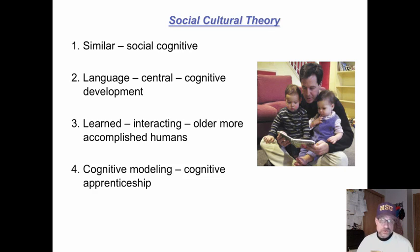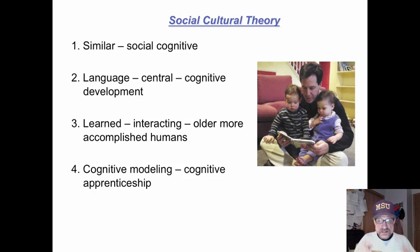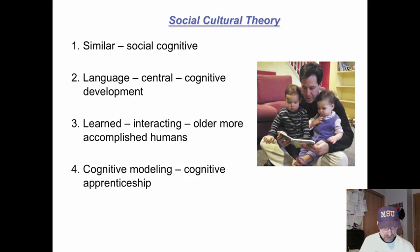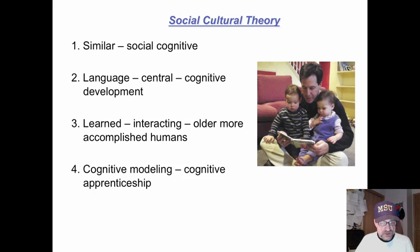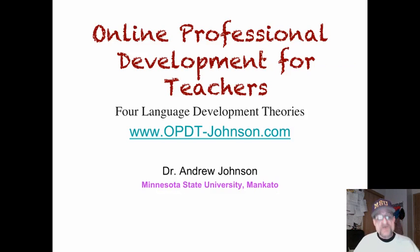And the last one, social cultural theory, similar to the social cognitive perspective. Here, language learning is central to cognitive development — the development of our thinking and thought process. Language is central to this cognitive development. It's learned by interacting with older and more accomplished human beings. We interact with people just a little ahead of us, or maybe far ahead of us. We learn language through cognitive modeling, that's when people think out loud, or cognitive apprenticeship — hearing the thoughts of others and trying things out in a supported environment.